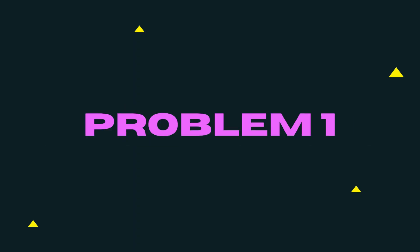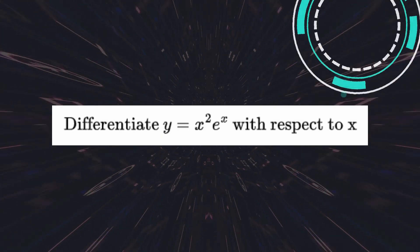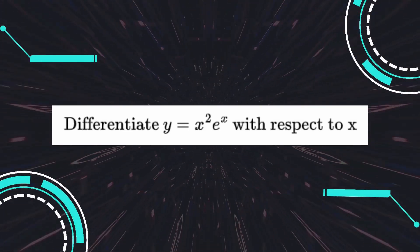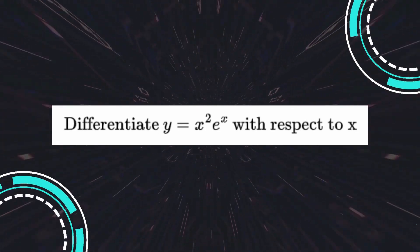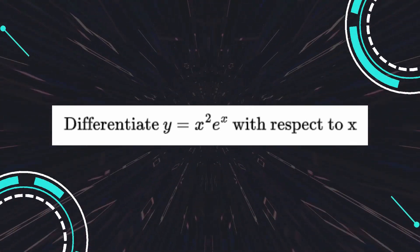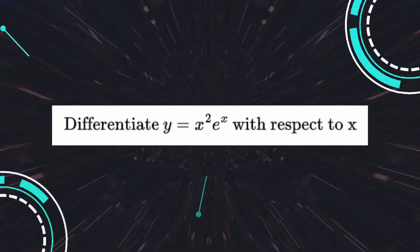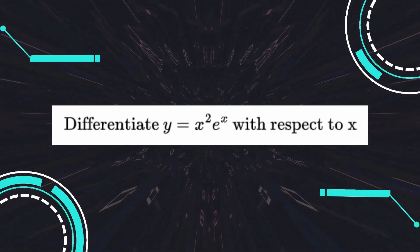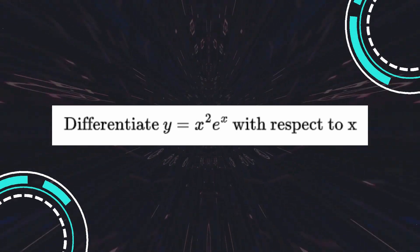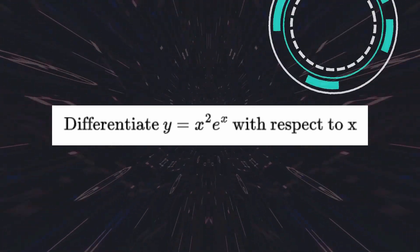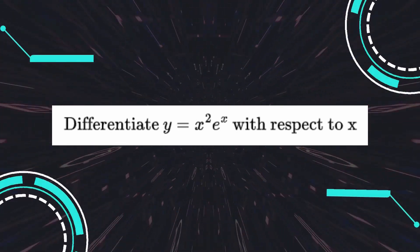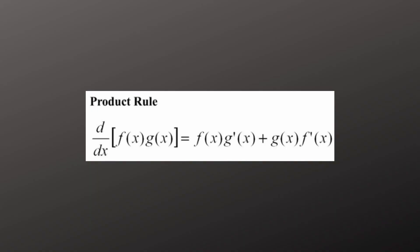The first question we will ask ChatGPT to solve is to find the differentiation of y equals x squared e to the power of x. This question involves the differentiation technique called the product rule.